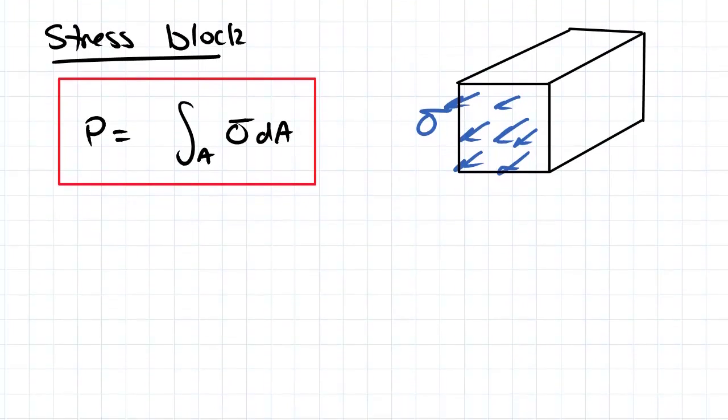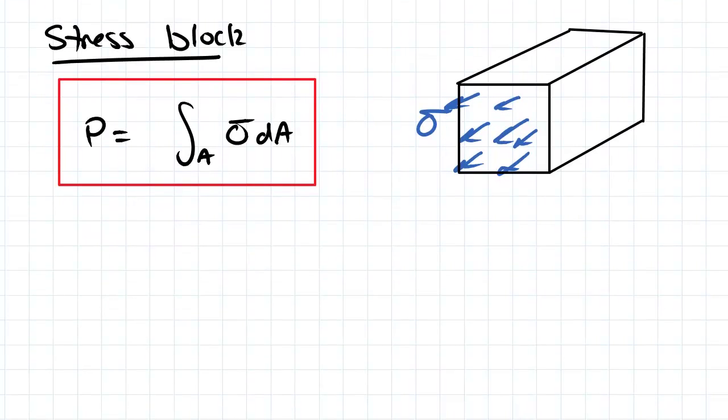So we have a look at our stress block. Our stress is going to act over the cross section of the section that we're looking at. And the equivalent force or the equivalent axial force is going to be equal to the integral over the area multiplied by our stress.